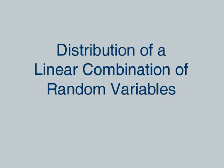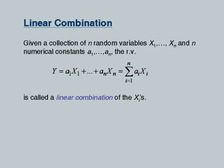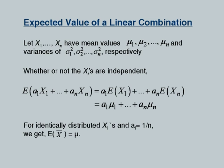Let us look at the distribution of linear combinations of random variables. Given a collection of n random variables x1, x2, ..., xn and n numerical constants a1, a2, ..., an, the random variable formed as their linear combination is called a linear combination of the xi's. Whether or not the xi's are independent, the expected value of this linear combination is the linear combination of the expected values. If each ai equals 1/n and the xi's are identically distributed with common mean mu, then the expected value of x-bar equals mu.